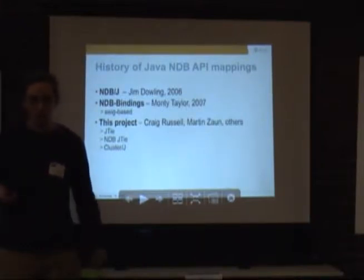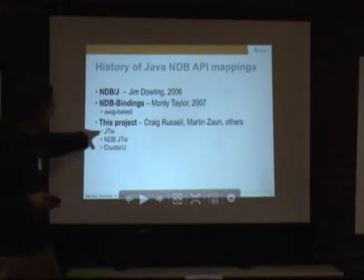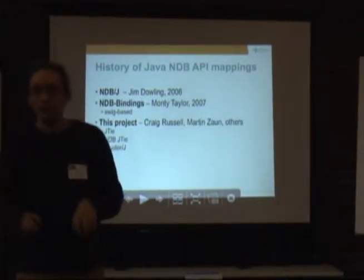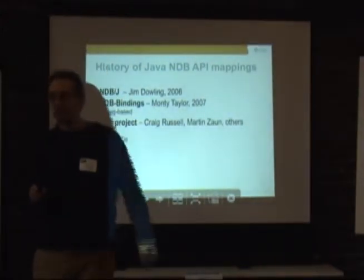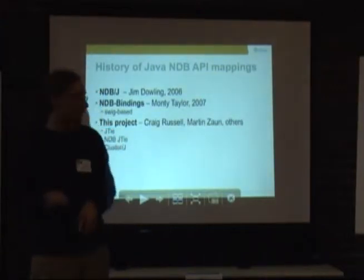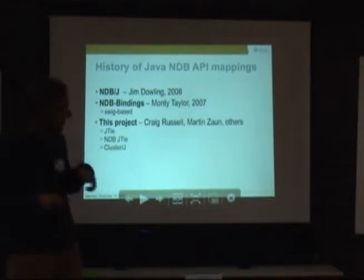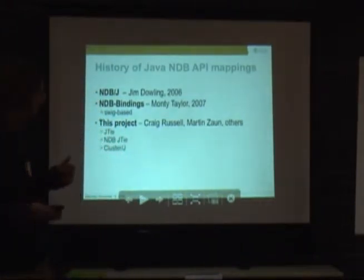And I'll tell you about ClusterJ. This is a project with three parts. The end result is being able to use the NDB API from very high level Java code as object-relational mapping — stored, deleted, persistent, whatever. I'm going to go through a little history here of mapping to this API in Java, because what we're working on here is the third one.